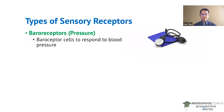First, we have baroreceptors. Baroreceptor cells detect pressure. An example are the baroreceptors in our blood vessels. In response to high blood pressure or low blood pressure, our body is able to trigger responses that will bring blood pressure back to normal levels.